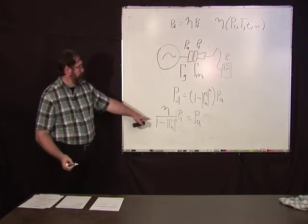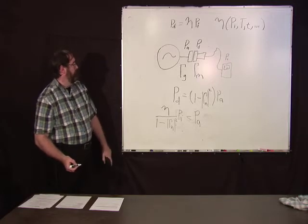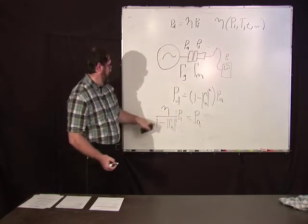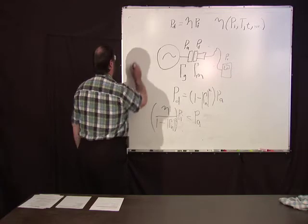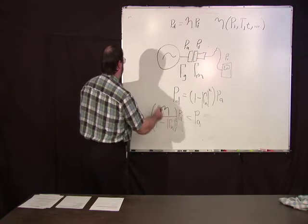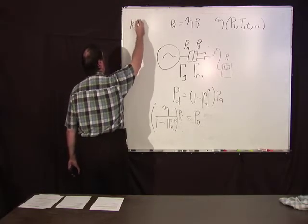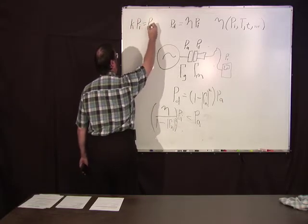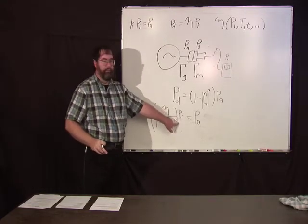So we know that the delivered power is equal to eta times pi. So we've got eta pi, which is pd, divided by one minus gamma squared equals the available power. Some simple algebra from that. This whole quantity here, we'll call it k. So we've got k pi equals pa.